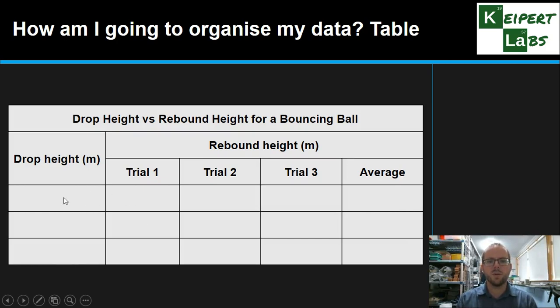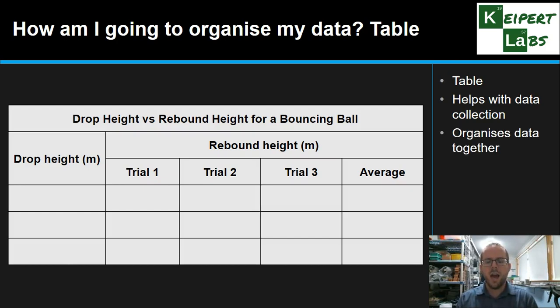And we've also got spaces to include at least three different versions of this variable because we want to make sure that we're really properly testing this. We're not giving it a half-baked kind of effort. So it helps us with data collection and it also makes sure it's organized together so we can see we've got a place to put things in an organized fashion.